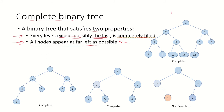Let's look at an example. Level 0 has a maximum of 1 node, so it is full. Level 1 has 2 nodes, so it is full. Level 3 has 4 nodes, so it is full. Level 4 is the last level and is not completely full, but all the nodes are as far left as possible. So we can say this is a complete binary tree.